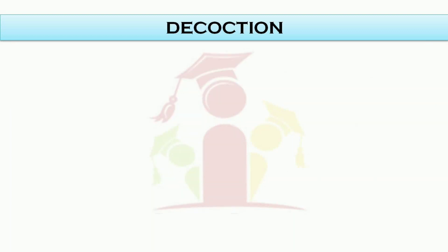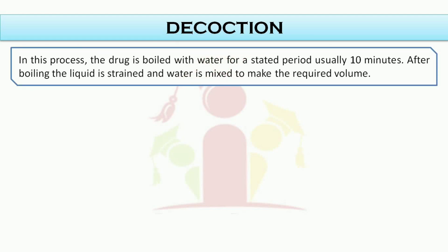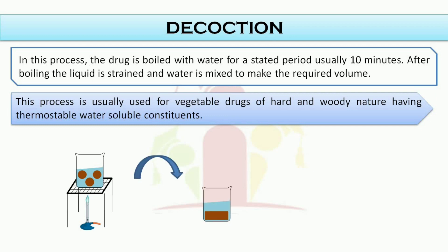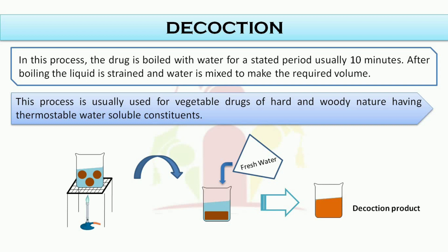The second process is decoction. In this process, the drug is boiled with water for a stated period, usually 10 minutes. After boiling, the liquid is strained and water is mixed to make the required volume. This process is usually used for vegetable drugs of hard and woody nature having thermostable water-soluble constituents. Fresh water is added to make up the final volume and the decoction product is obtained.